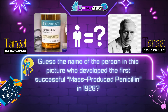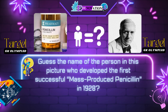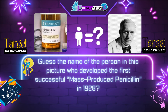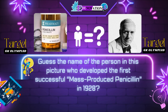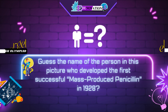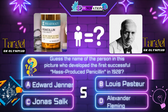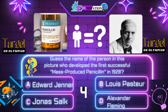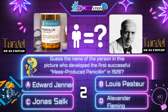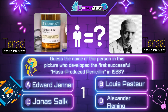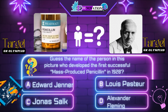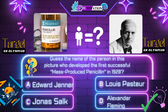Now next question. Guess the name of the person in this picture who developed the first successful mass-produced penicillin in 1928. Your options are: A. Edward Jenner, B. Louis Pasteur, C. Jonas Salk, D. Alexander Fleming. Time's up. Correct answer is D. Alexander Fleming.